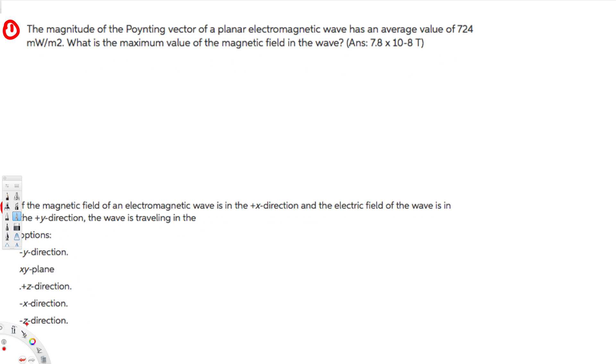Hey, what's going on guys, let's do this problem right here. The first question is asking the magnitude of the Poynting vector of a plane electromagnetic wave has an average value of 724 milliwatts per meter squared. What is the maximum value of magnetic field in the wave? So here they are asking for the magnetic field, now let's see how we can find it.